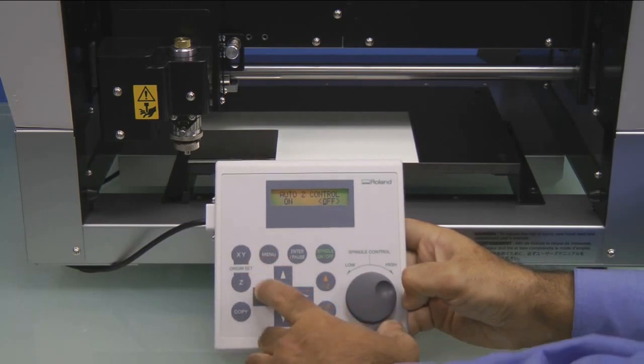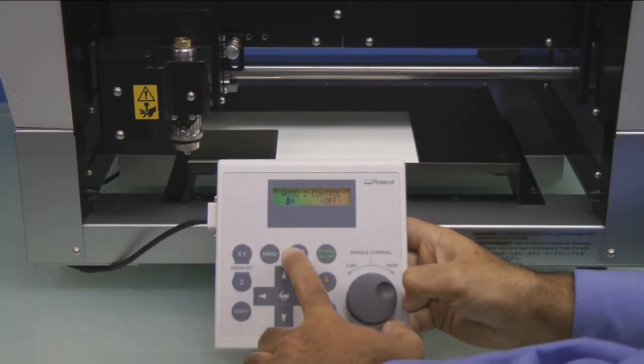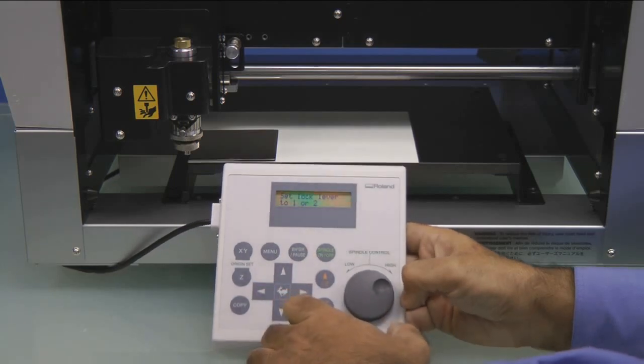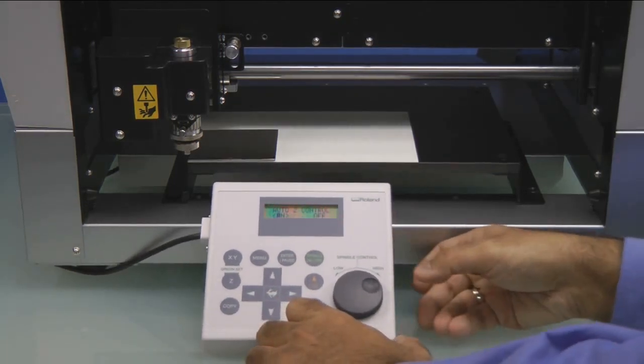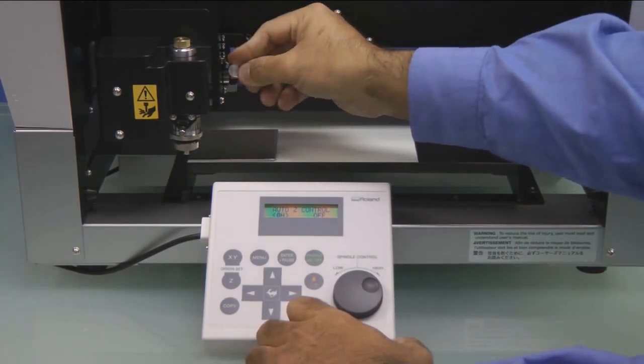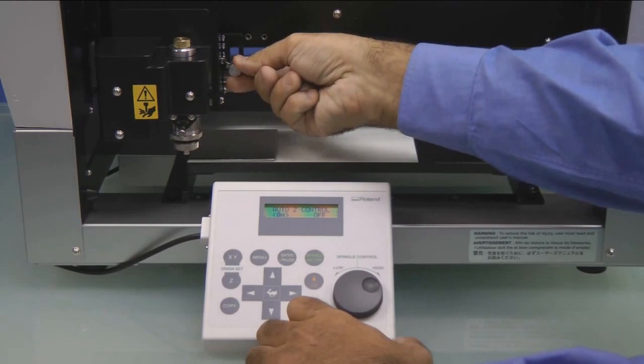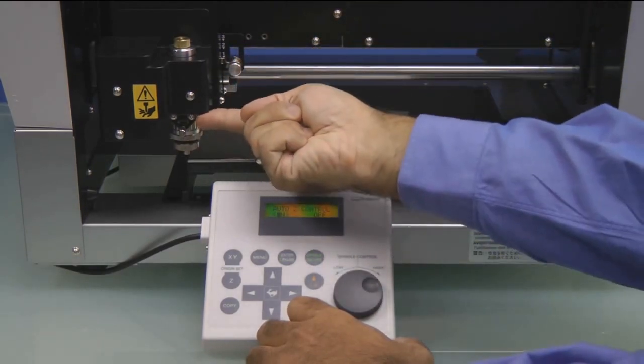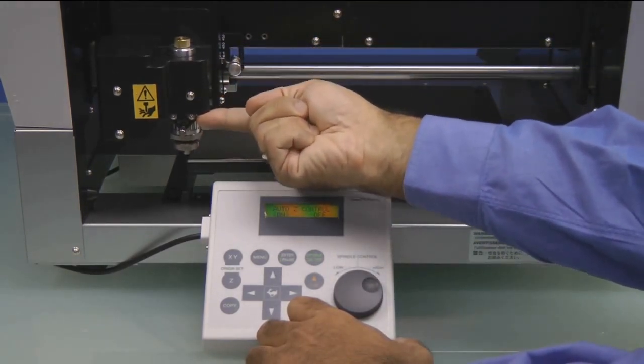Press the Menu key to Auto-Z Control, move the cursor to On, and press Enter. The display will read, Set Lock Lever to Position 1 or 2. On the right side of the spindle, press the button in and down to set the lever to 1. This will float the spindle freely.